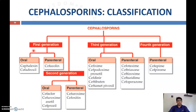The first generation is divided into oral and parenteral forms. Oral first-generation cephalosporins include cefalexin and cefadroxil, while cefazolin is the example of a parenteral first-generation cephalosporin.